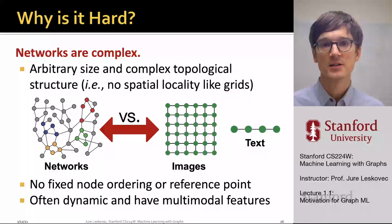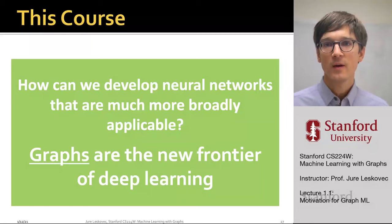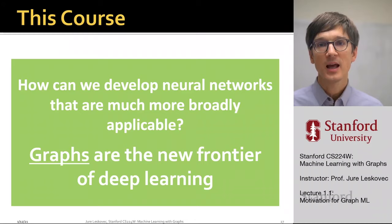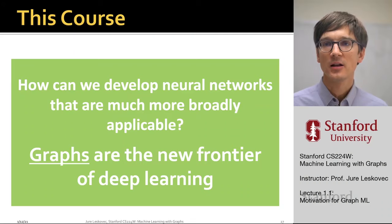In this course, we are really going to talk about how do we develop neural networks that are much more broadly applicable — neural networks that are applicable to complex data types like graphs. Relational data and graphs are the new frontier of deep learning and representation learning research.